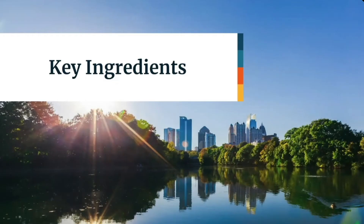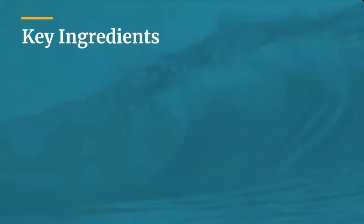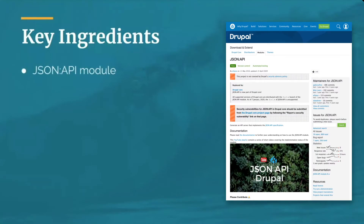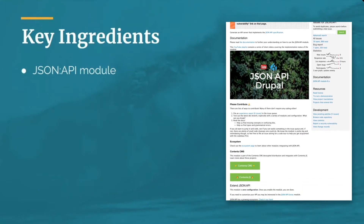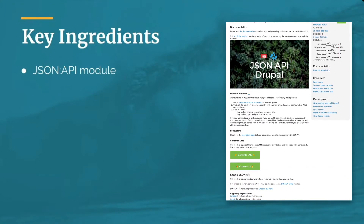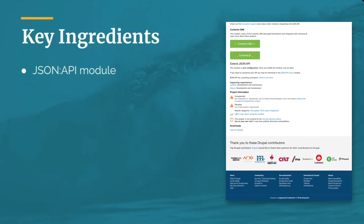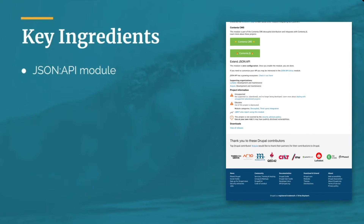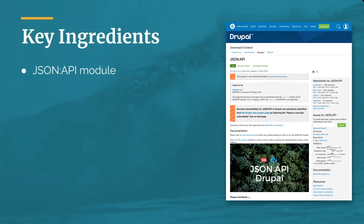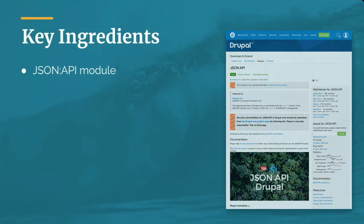So what are the ingredients to migrating your existing site to a headless architecture? Let's go through each ingredient one by one. The first ingredient, as mentioned, is the JSON API module. This module was added to Drupal 8 core and is also present in Drupal 9. It simply exposes all of your content in the JSON API format so that it can be consumed by other applications, including Gatsby.js.